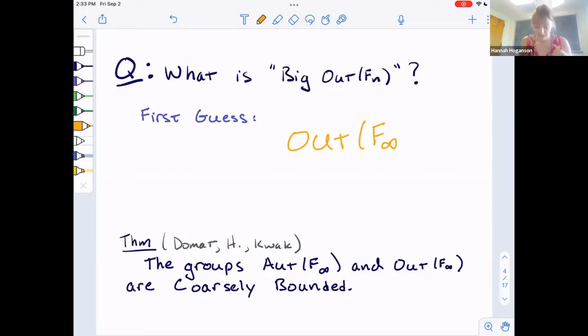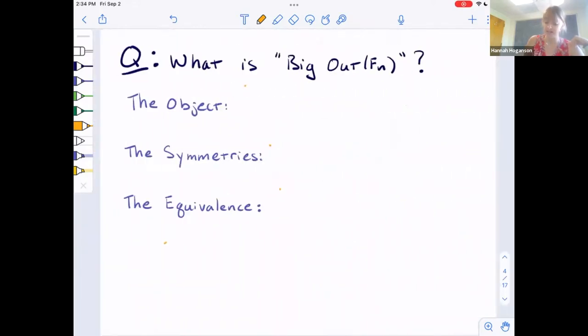It has this property though, that it's coarsely bounded, which is this notion Elizabeth introduced. Out F infinity, so this is a great first guess and it's an interesting group. But with George Domat at Rice University and Sang Hoon Kwok at University of Utah, this summer we showed that the groups out F infinity and aut F infinity are coarsely bounded. For now, we'll just say that that means that they don't actually have very interesting global geometry. So this is not very satisfying. And so you go ask Mladen and Yael, what is big out F_n?